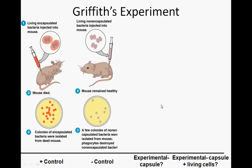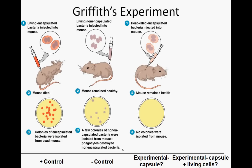Griffith didn't know two things: whether whatever made smooth bacteria smooth could be transferred to something else, or whether the smooth gooey material was actually poisonous and killing the mice. So in one experimental group, he killed the bacteria — they still had the gooey stuff but weren't alive — and injected those into mice. The mice didn't get sick and there were no bacteria in them, which eliminated the toxic idea.